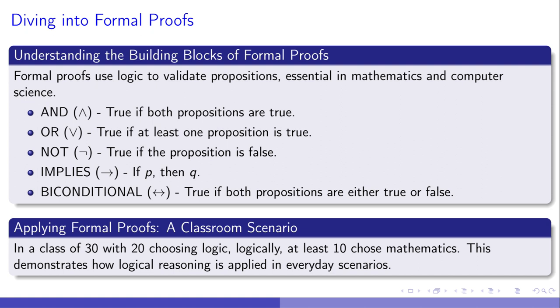Building from our dive into logical statements, we now spotlight the role of logical connectors in proofs. Imagine this. 20 students choose logic, implying at least 10 also pick mathematics. How? By applying implies, we link choices in a clear, logical sequence. This scenario not only demonstrates the implies connector, but hints at AND logic. If you're in the logic group, you might also embrace math. Just like puzzles, connectors piece together arguments, revealing the truth step by step. Grasping this concept, let's confidently stride into more complex discussions with our logical toolkit at the ready.